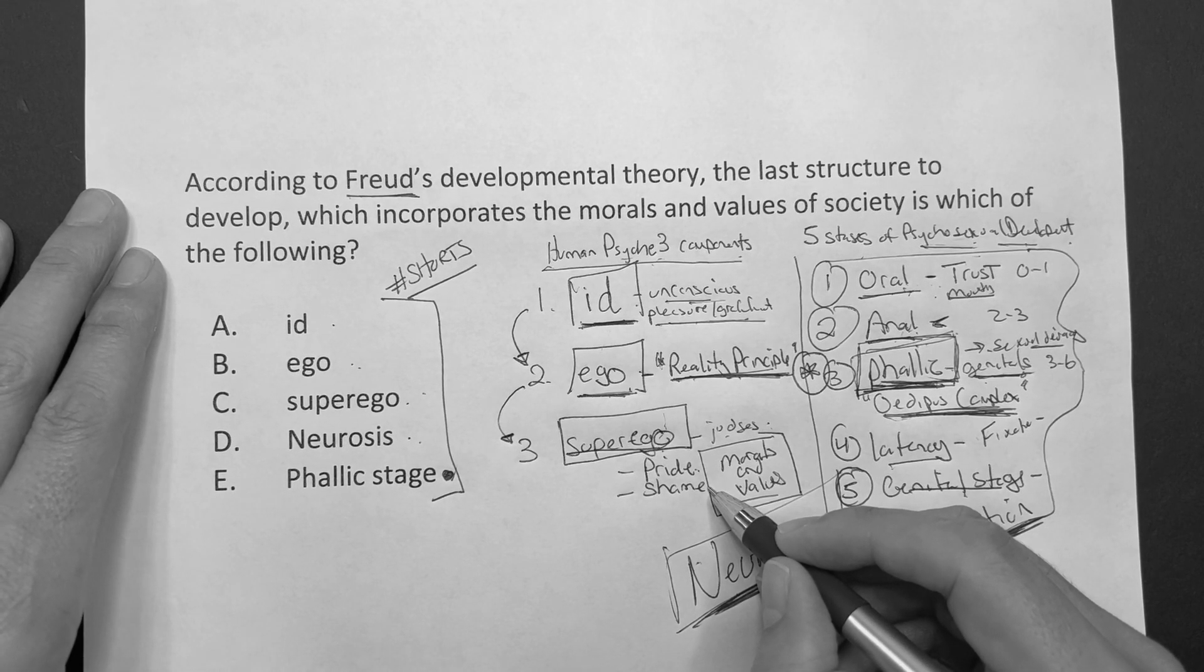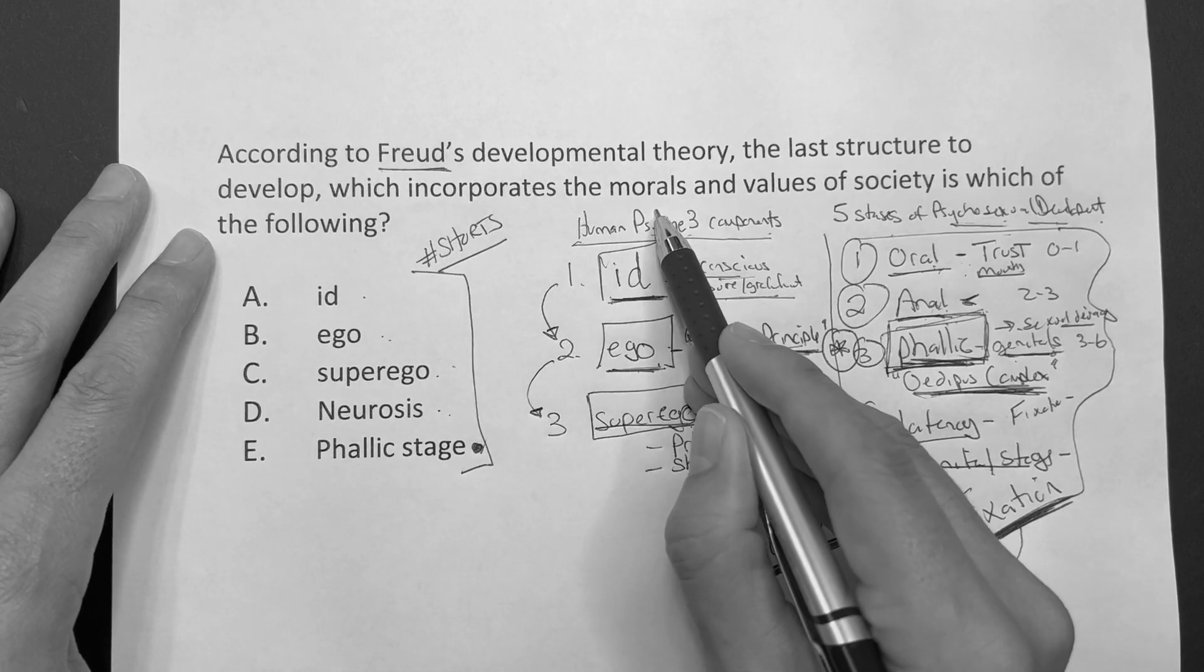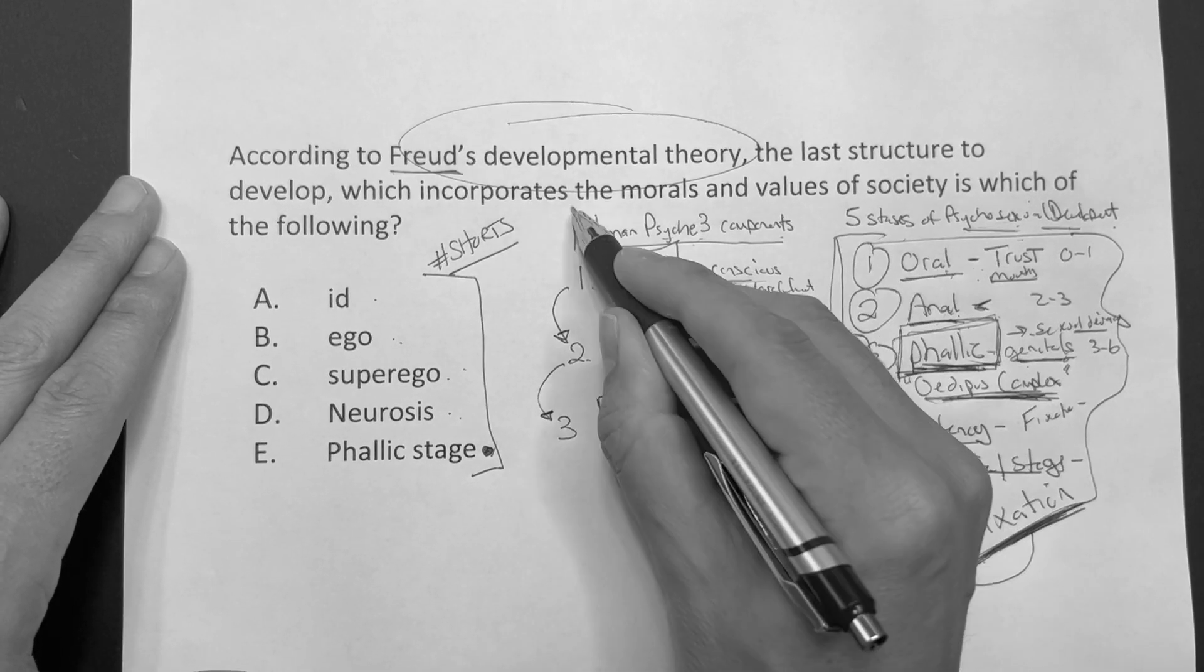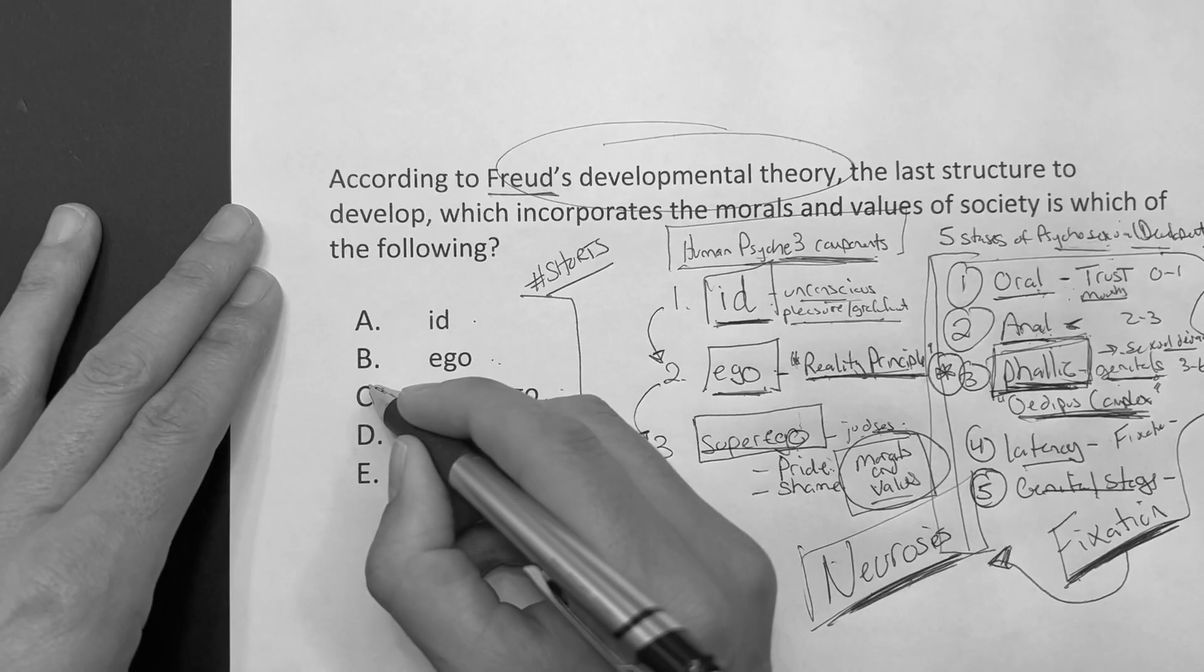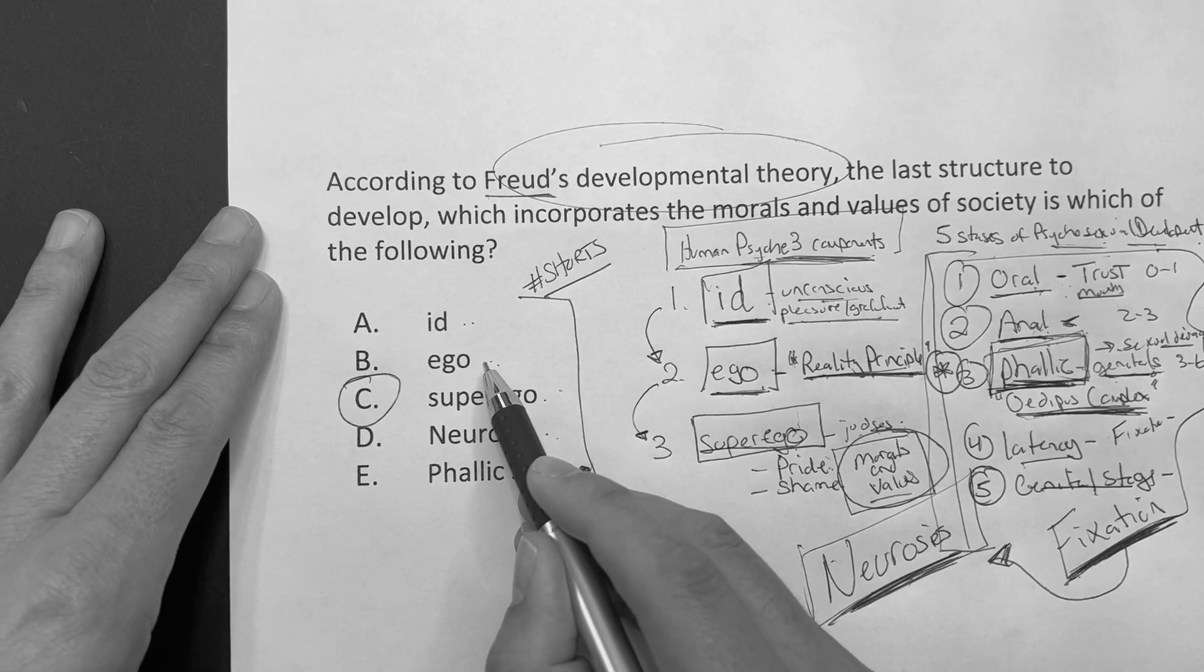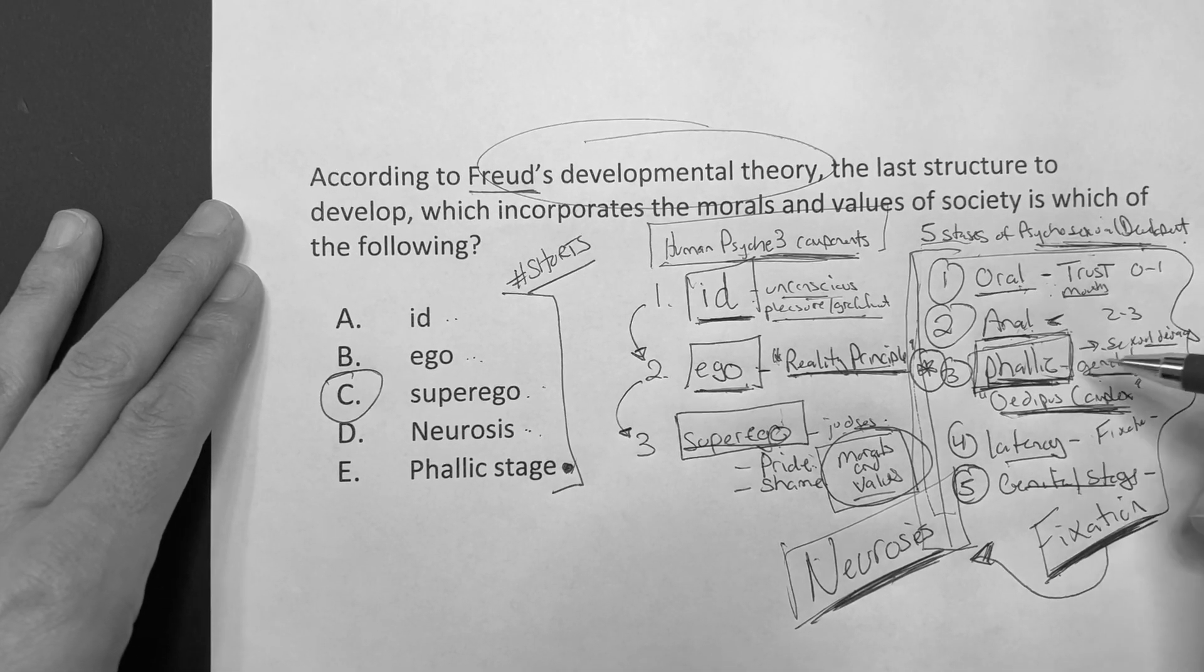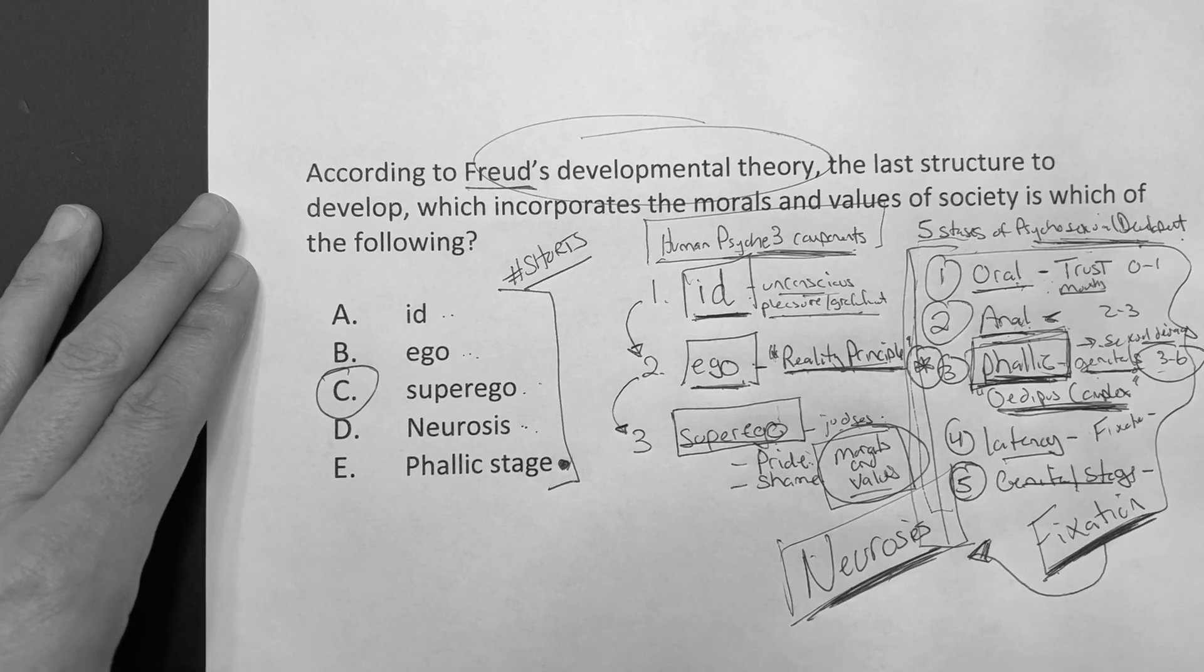Okay, so back to our original question. It says, according to Freud's developmental theory, the last structure to develop which incorporates the morals and values of society is which the following? Well, it's developmental theory. It didn't say psychosexual development, or we've probably been over here somewhere. But it is developmental theory. The human psyche has three components. The last to develop that incorporates morals and values is going to be our superego. If it said unconscious first we would have went id. If it would have said reality principle I would have went with something with the ego. Neuroses are what's developed if we get fixated in any of the psychosexual developmental stages. And then if you're going to memorize one stage that's kind of out of context that's hard to memorize, you're going to say phallic because three to six years of age, but that's the one where they have Oedipus complex, sexual deviancy.